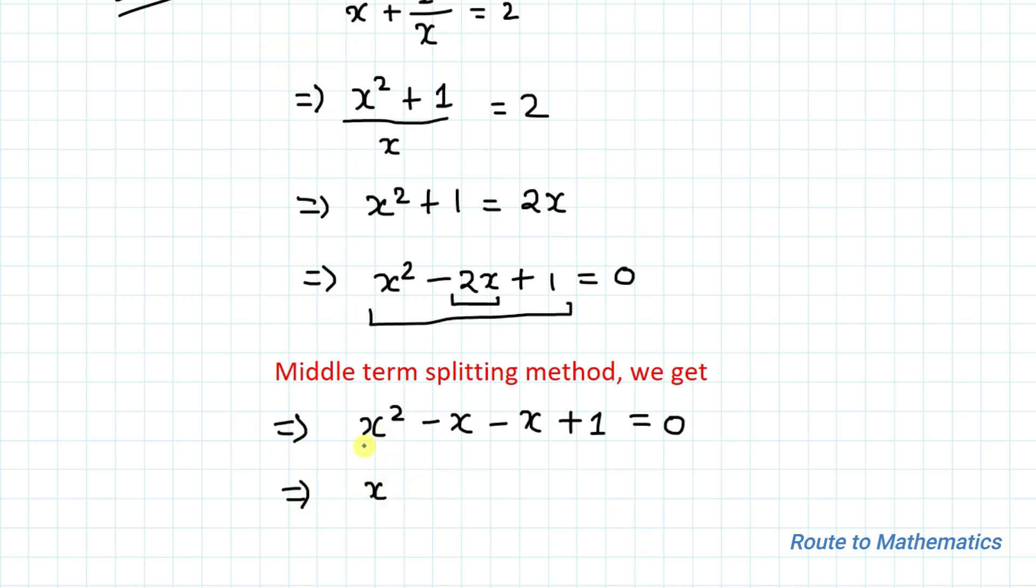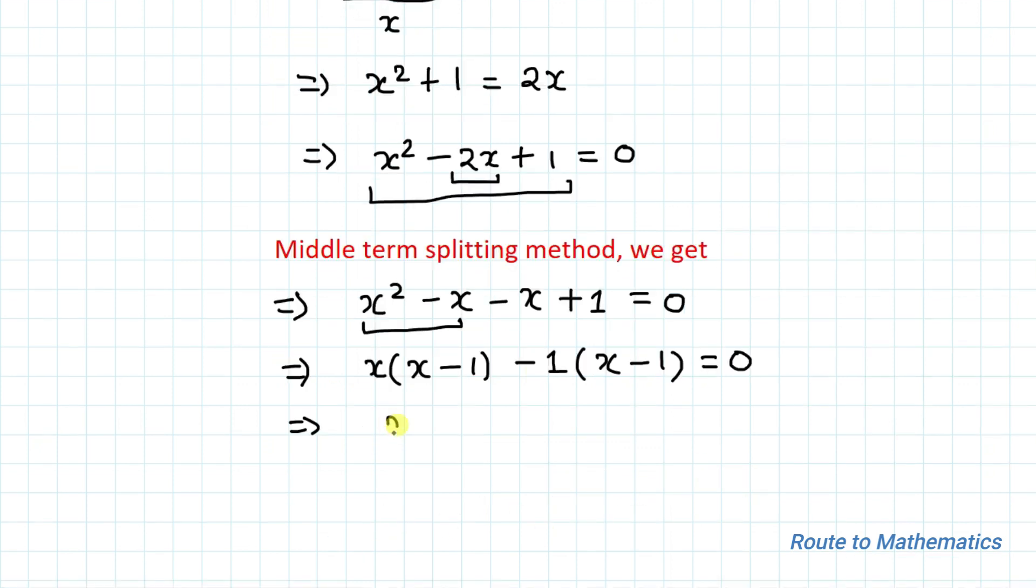Taking x common from the first two terms, we have x times x minus 1. Taking minus 1 common from the last two terms, we get minus 1 times x minus 1, which equals 0.